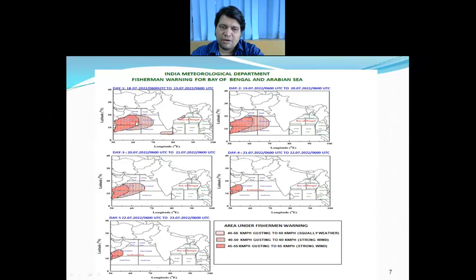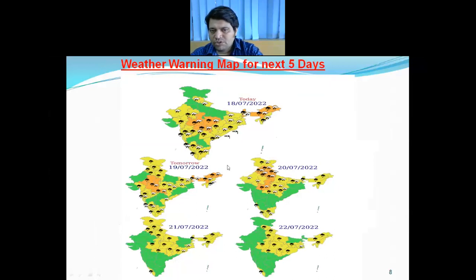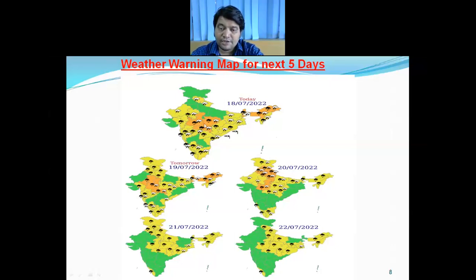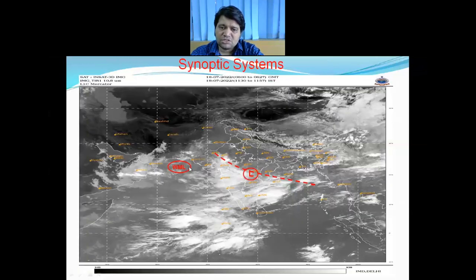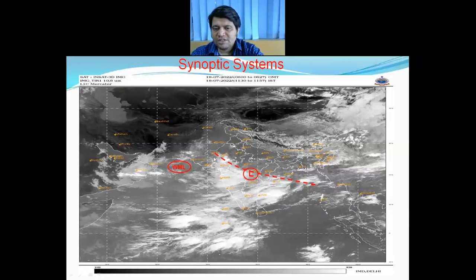Over west-central and adjoining east-central Arabian Sea, winds with speed 40 to 50 kmph gusting to 60 kmph are likely to continue during the next three days. Looking at the weather warning for the next five days: the plains of northwest India are likely to experience a fresh monsoonal spell from 19th July, as the monsoon trough — which was yesterday passing through the well-marked low pressure area — has shifted slightly northward and is now passing through Jaisalmer.